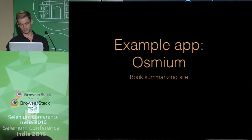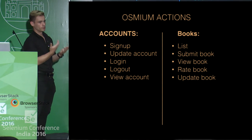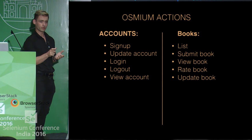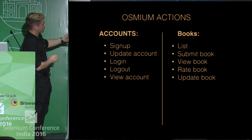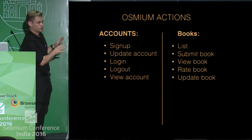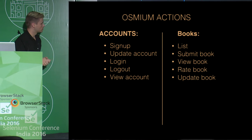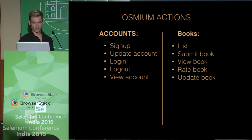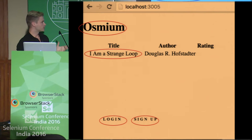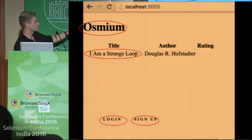For this talk, I'll just go over a simple app called Osmium. It's a book summarizing site. Basically we can submit a book, give a summary of it, and rate the book. We can log in, view our account, update our account. This is about as simple as you can get for a real-world-ish demo app. I think we can all agree this is a very, very simple app that does very, very little.